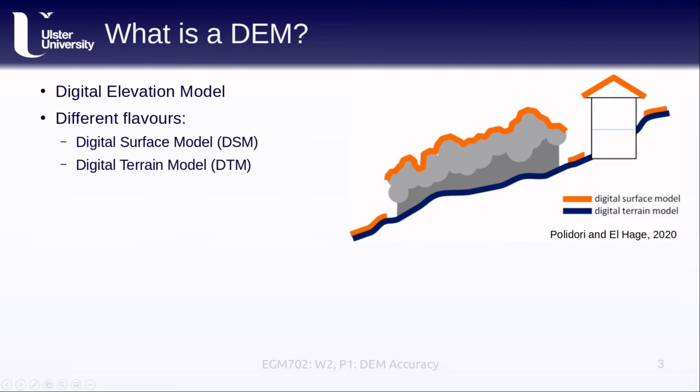We might also use a digital terrain model, and this is where the elevation values represent the actual ground. We've removed the trees, the buildings, anything built up on top of the ground, and we're just looking at the surface of the earth.